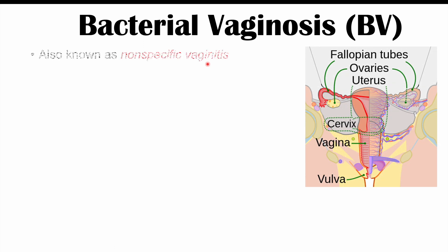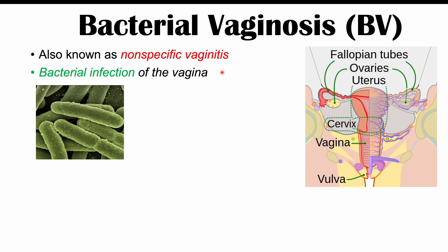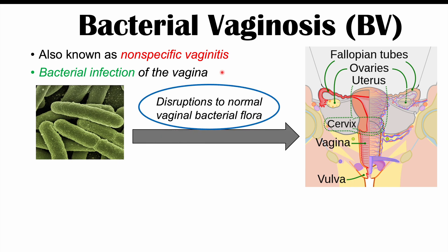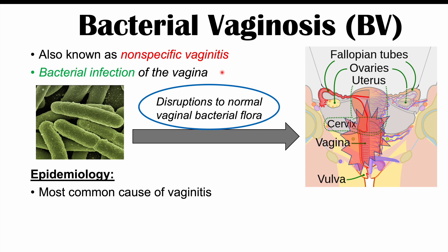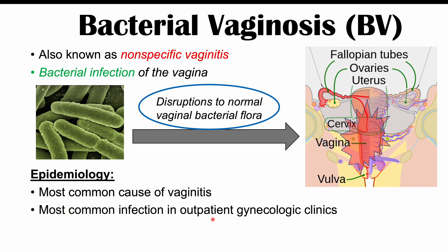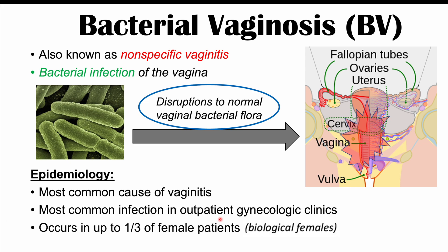Bacterial vaginosis, or BV, is also known as nonspecific vaginitis. It is a bacterial infection of the vagina where there will be some disruptions to normal vaginal bacterial flora. These disruptions cause an infection within the vagina. This is actually the most common cause of vaginitis — an inflammation of the vagina — and the most common infection seen in outpatient gynecologic clinics. BV can occur in up to a third of female patients, and in certain patient populations with risk factors, the numbers can be even higher.